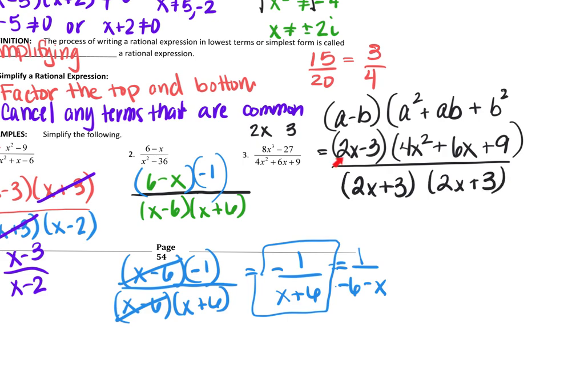Now notice that these are different terms right here. These are different terms. You can't make them the same by doing the negative 1 trick we tried here. So in theory, this already is set to its lowest terms. There is nothing else that can be done to this problem here.